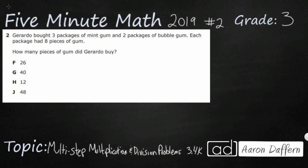So Gerardo is going to buy some gum, three packages of mint, two packages of bubble gum, and then each package had eight. So this is definitely going to be one where we probably want to draw a picture. So what I'm going to do is I'm just going to draw three packages of mint. So I'm just going to put M, M, M.